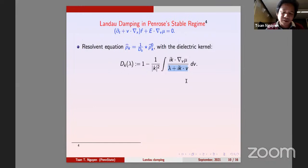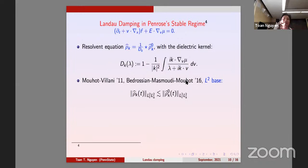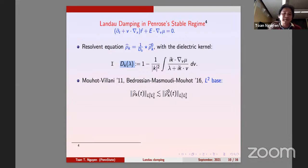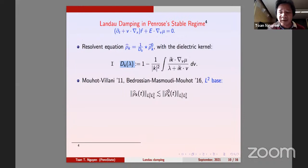In the stable regime where D is non-zero, there's a famous result by Mouhot-Villani, later extended by Bedrossian-Masmoudi-Mouhot. The linear result says the density of Vlasov-Poisson is bounded by the density of the free transport — immediate since D is bounded away from zero. For the nonlinear result, Mouhot-Villani proved it for analytic data and Bedrossian-Masmoudi extended it to Gevrey data.